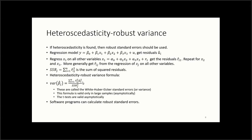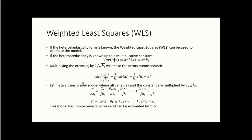An important note: we are only correcting the variance of the coefficients, not the coefficients themselves. The second correction procedure is called Weighted Least Squares (WLS). We distinguish two cases: when the heteroscedasticity form is known (WLS), and when it is not known (feasible GLS), which is the more common case.